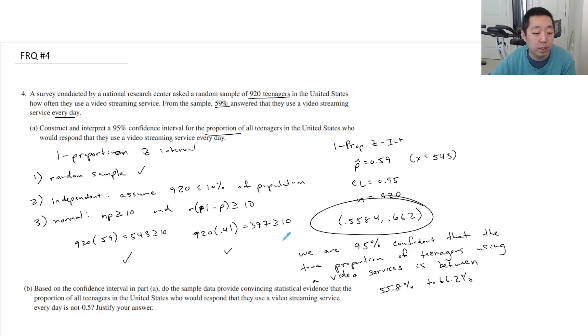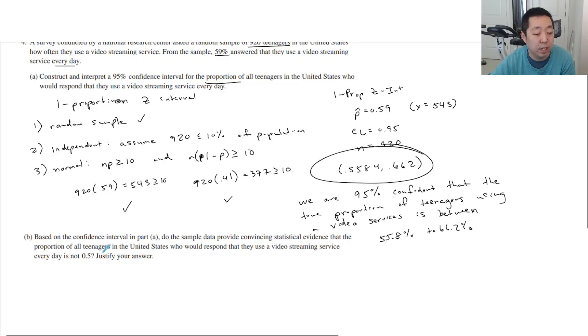Okay. Based on the confidence interval, did the sampling data survive statistical evidence that the proportion of teenagers in the U.S. who would respond that use a video streaming service every day is not 0.5? And we would say yes, because the confidence interval does not contain, the confidence interval does not contain 0.5. Does not contain 0.5. Okay. That would be sufficient to justify that.